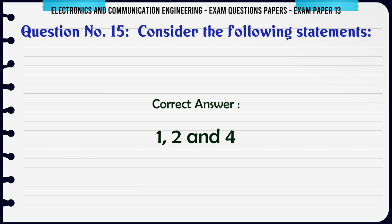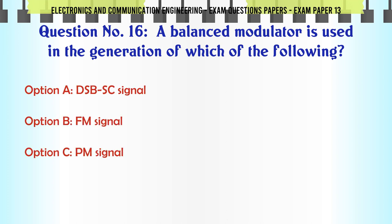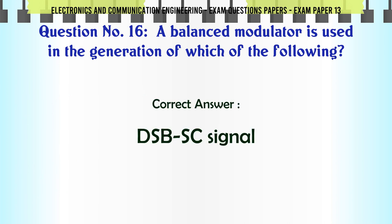A balanced modulator is used in the generation of which of the following? A: DSBSC signal, B: FM signal, C: PM signal, D: PAM signal. The correct answer is DSBSC signal.